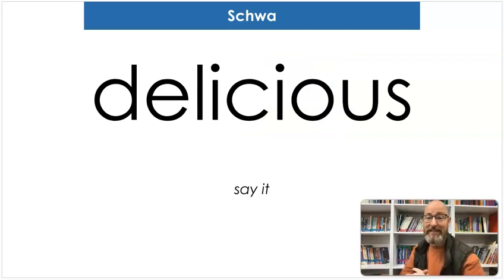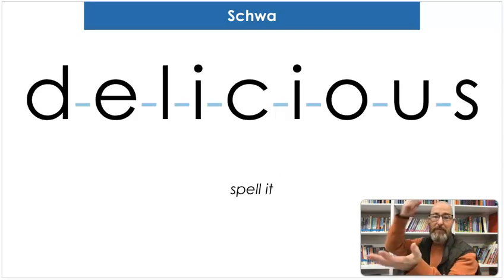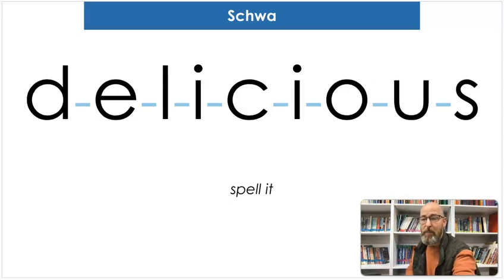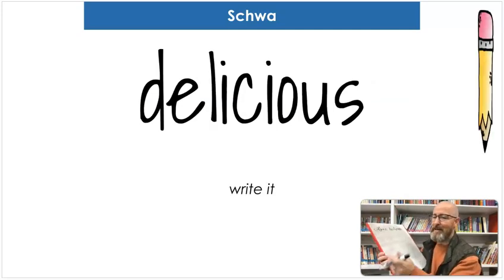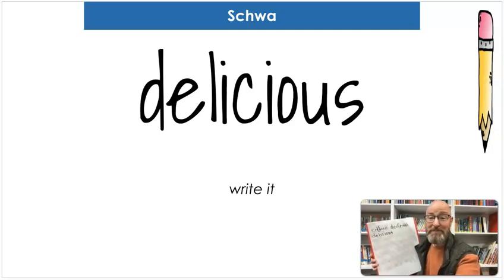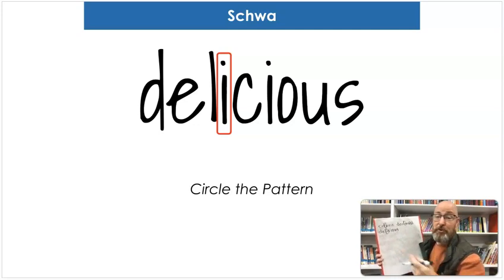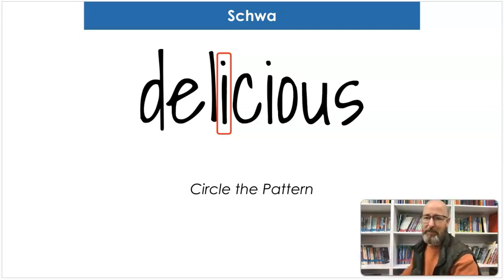The next word is 'delicious.' Say delicious. If something is yummy, it's delicious. Map the sounds: D-I-L-I-S-H-U-S. Delicious. Spell it: D-E-L-I-C-I-O-U-S. Delicious. If you were sounding it out, you probably already found that schwa. Let's write it: D-E-L-I-C-I-O-U-S. Where's the schwa? That's right — it's that first I. It couldn't be the E because it says 'dee,' and C-I says 'sh,' and O-U says 'uh,' which is a vowel team. So that would be it.